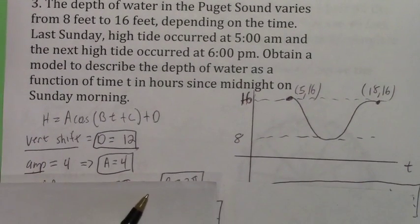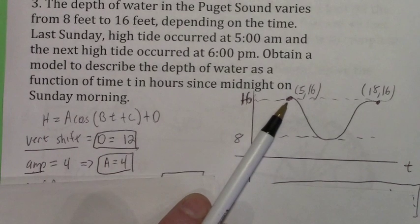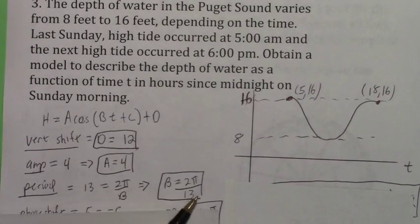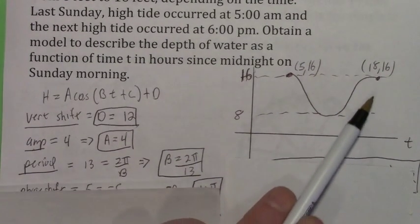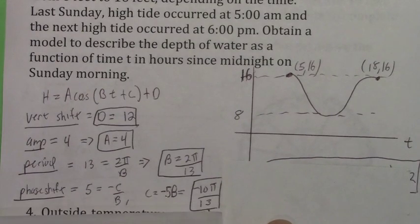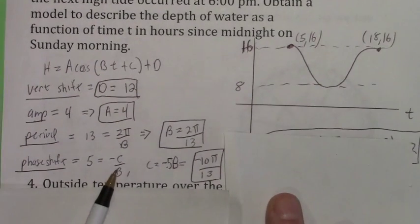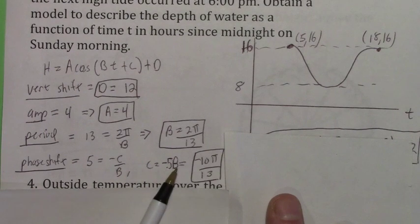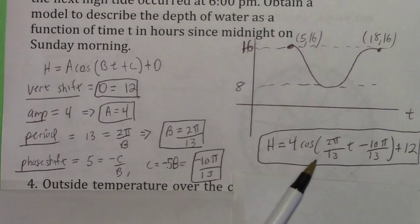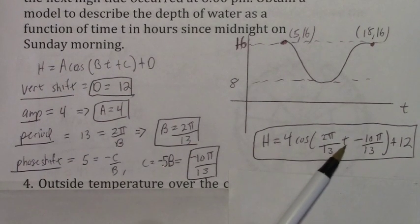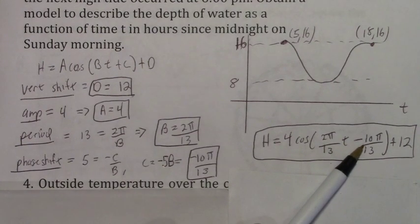Starting at the extreme point, a is positive 4. The period is 18 minus 5 equals 13 hours. There is a phase shift of 5. Using the formula, phase shift equals negative c over b, so c equals negative 5b. Replacing b with 2 pi over 13, we get c equals negative 10 pi over 13. Putting it all together gives the equation. Using the book's method, you could also write it as 4 cosine(2 pi over 13 · (t minus 5)) plus 12.